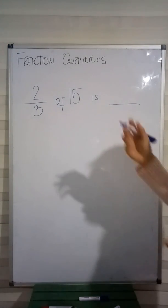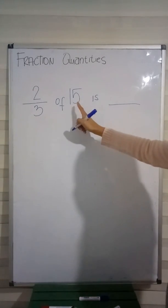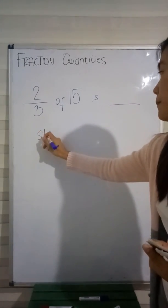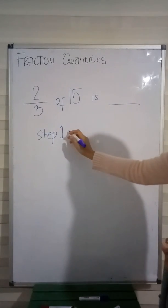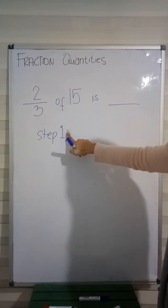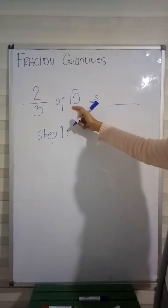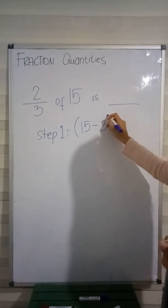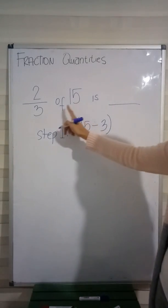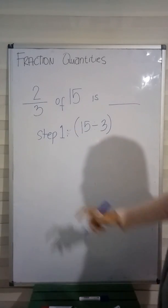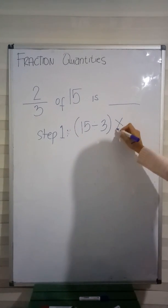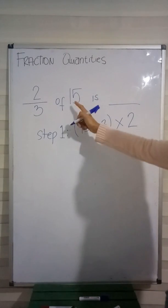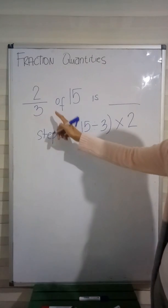The first step is the same as with numerator 1 — you still divide the number by the denominator. In this case we have 15, so you divide 15 by the denominator. You can pause the video to copy if you want to write it down. Step 1: divide the number by the denominator. Here, we have 15 and our denominator is 3, so we write (15 divided by 3). We still have 2 as our numerator, so we multiply outside the parenthesis: times 2. After dividing 15 by 3, we multiply the result by 2.